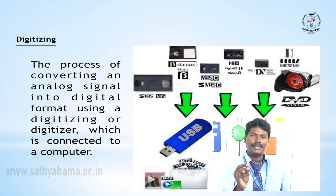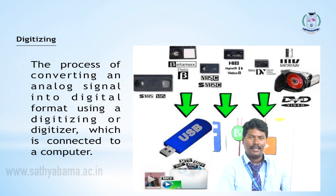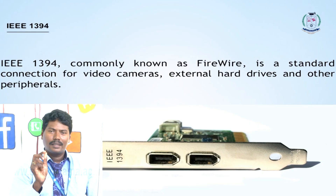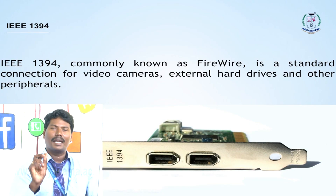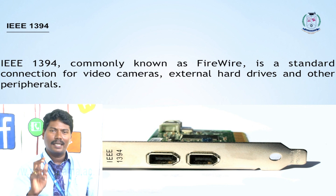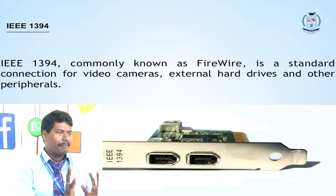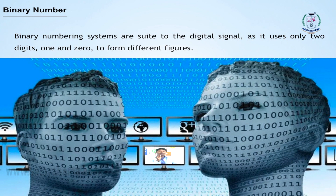Video capture or digitizing is converting analog signal into digital signal. In earlier days, we used analog tapes, so we had to convert analog signal into digital format. The IEEE 1394 cable is used for converting analog signal into digital signal, because the computer knows only 0s and 1s.